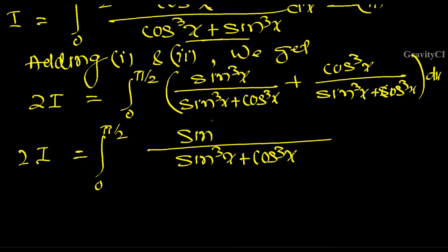The terms cancel. So 2I equals integral 0 to π/2 dx.